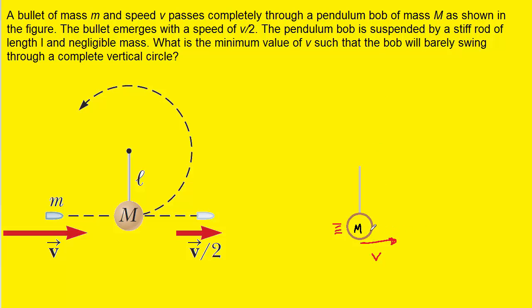Now, of course, after the collision, it's going to be moving and it's going to swing upward in a circular path until it reaches about this position right here. And what's important to note is that the question wants the minimum value of the bullet's speed so that the bob will barely swing through a complete vertical circle.